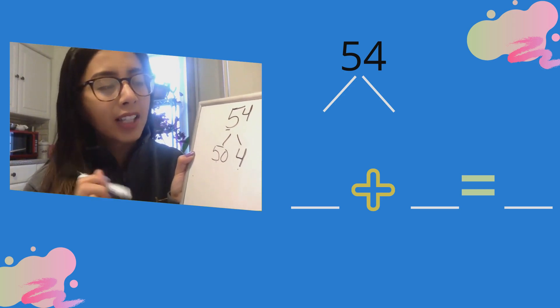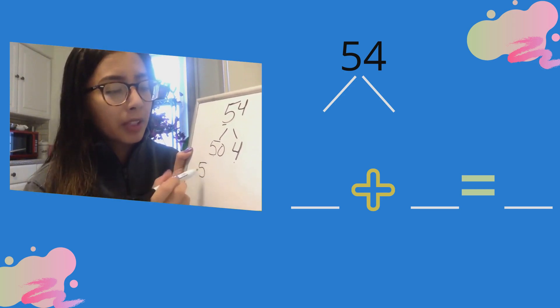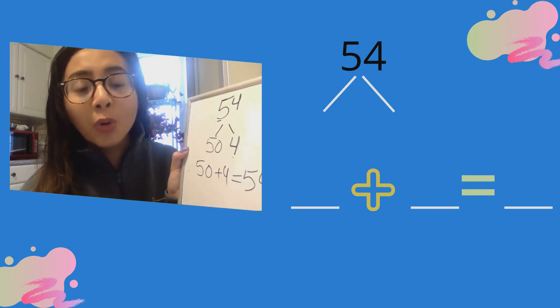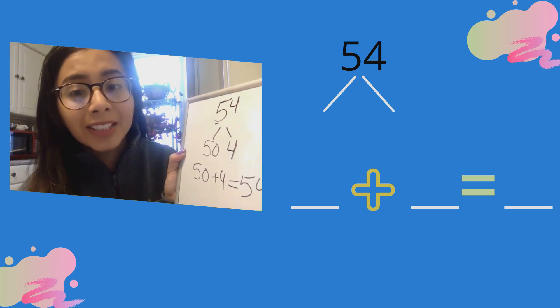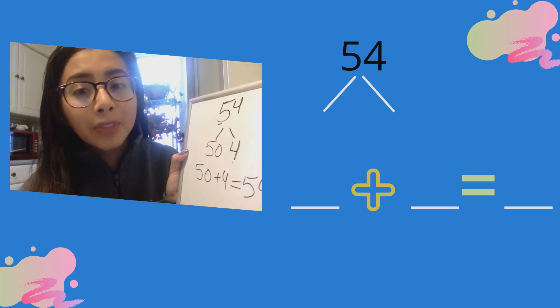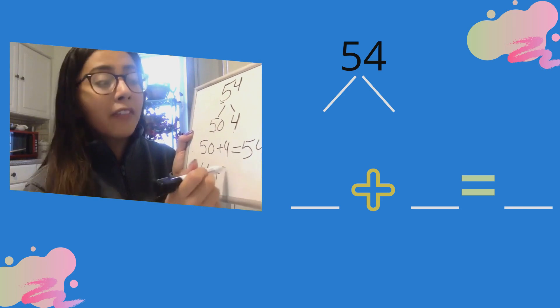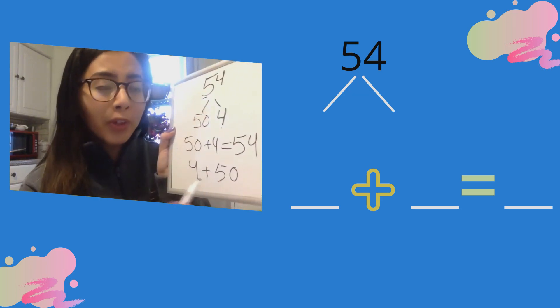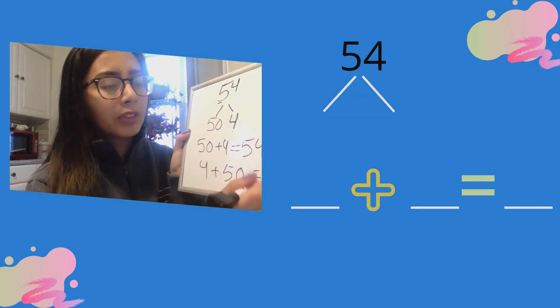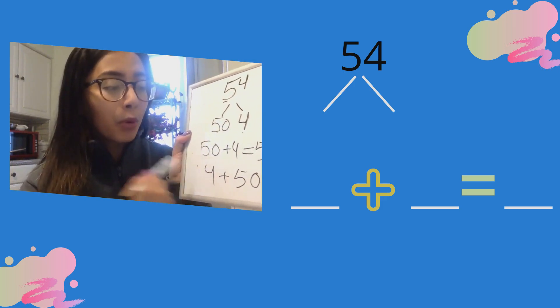So let's start with our tens. We can say 50 plus 4 is the same as 54, or we can start with the ones and say, hmm, 4 more than 50. So 4 more than 50 equals 54. And then both of these, the total is still the same. I still have 54.